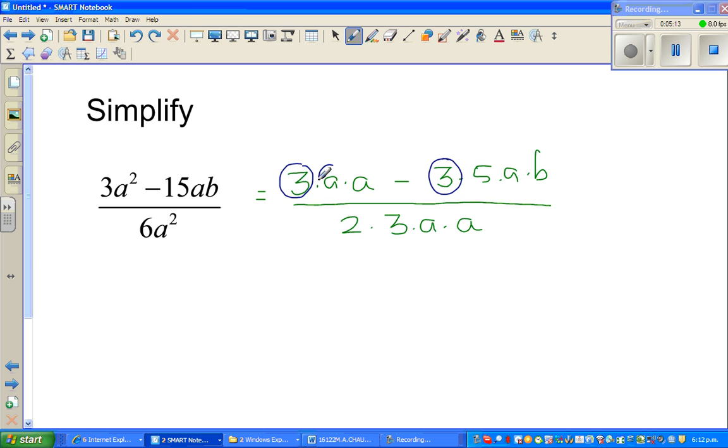So what is common? Let me show you the commons. You've got a 3 here, you've got a 3 here, you've got an a here, you've got an a here. Okay, so can I write now the numerator like this: 3a times a minus 3a times 5b over 3a times 2a.